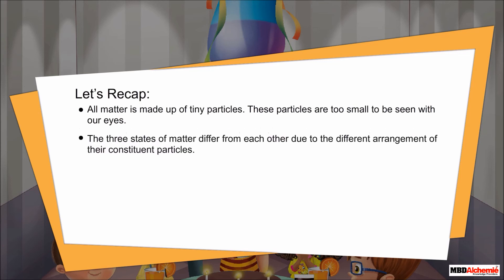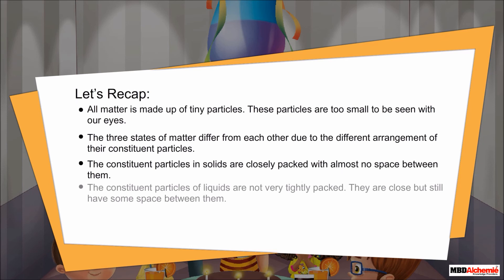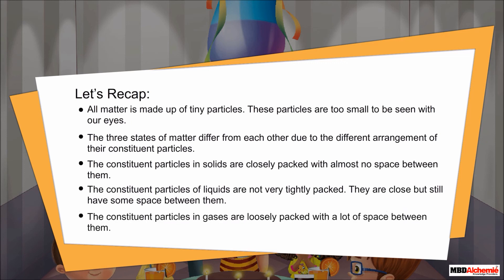Let's recap. All matter is made up of tiny particles that are too small to be seen with our eyes. The three states of matter differ from each other due to the different arrangement of their constituent particles. In solids, particles are closely packed with almost no space between them. In liquids, particles are close but have some space between them. In gases, particles are loosely packed with a lot of space between them.